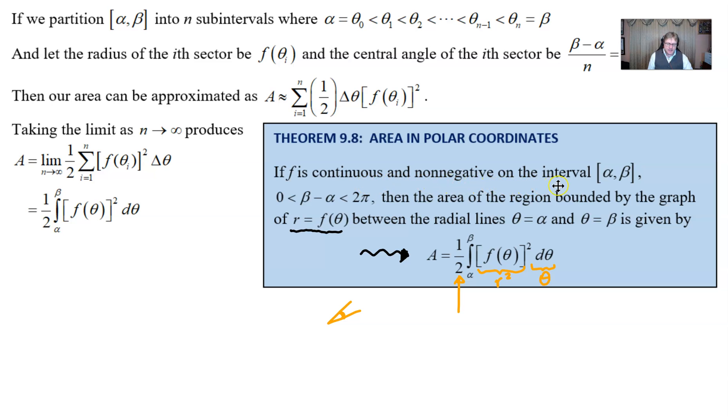If f is a continuous and non-negative on the interval alpha to beta, zero is less than beta minus alpha is less than 2 pi. Now that's kind of important so that we don't run the risk of trying to find the area overlapping itself. So I know that that might be a little confusing but we have to know that beta minus alpha is always going to be some value that's smaller than 2 pi and it also has to be a positive result. Then the area of the region bounded by the graph r equal to f theta between the radial lines, the spokes of our wheel alpha to beta, is given by this expression.